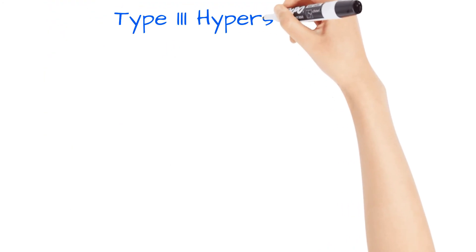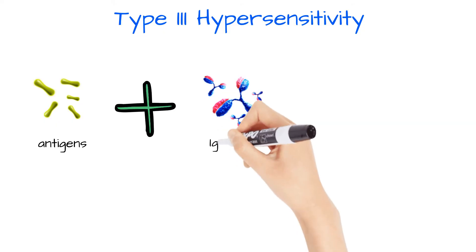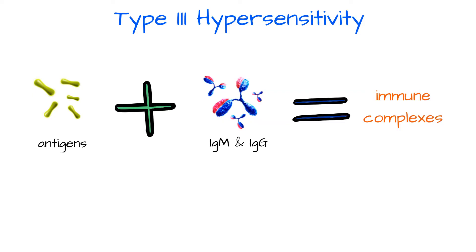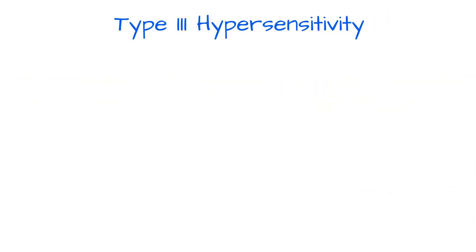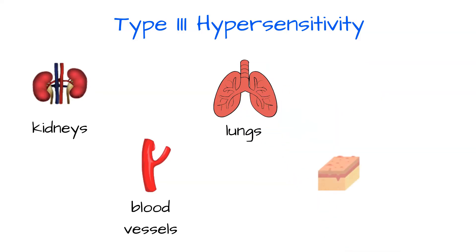Type 3 hypersensitivity is mediated by immune complexes, in which antigens combine with IgM and IgG to form very small complexes that phagocytes can't remove. Antigens from certain viruses, bacteria, and fungi can lead to this reaction. The complexes eventually deposit themselves in other areas of the body, which leads to inflammation and destruction of the affected tissues. The parts of the body mostly affected by this type are the kidneys, blood vessels, lungs, skin, and joints.